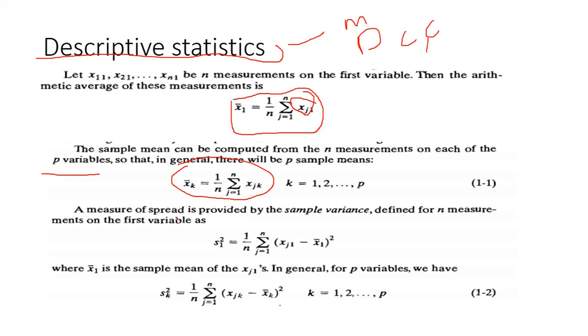A measure of spread, spread means variation or dispersion, comes under the variance. We all know this, the sample variance defined for n measurements on the first variable. This is the formula for variance. We are dealing with sample variance here. When you're dealing with sample variance then it will be comes under unbiasedness, n minus 1 will be there in denominator. Where x1 bar is the sample mean and xj1, in general for p variables this is for p variable cases.